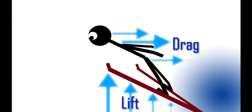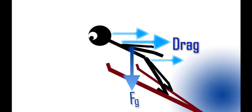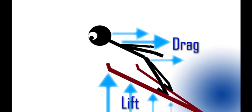This is the free body diagram of a ski jumper during flight. The main forces involved are the forces of gravity, lift, and drag. Drag and lift both involve air resistance, so we won't really get into the details of calculations.